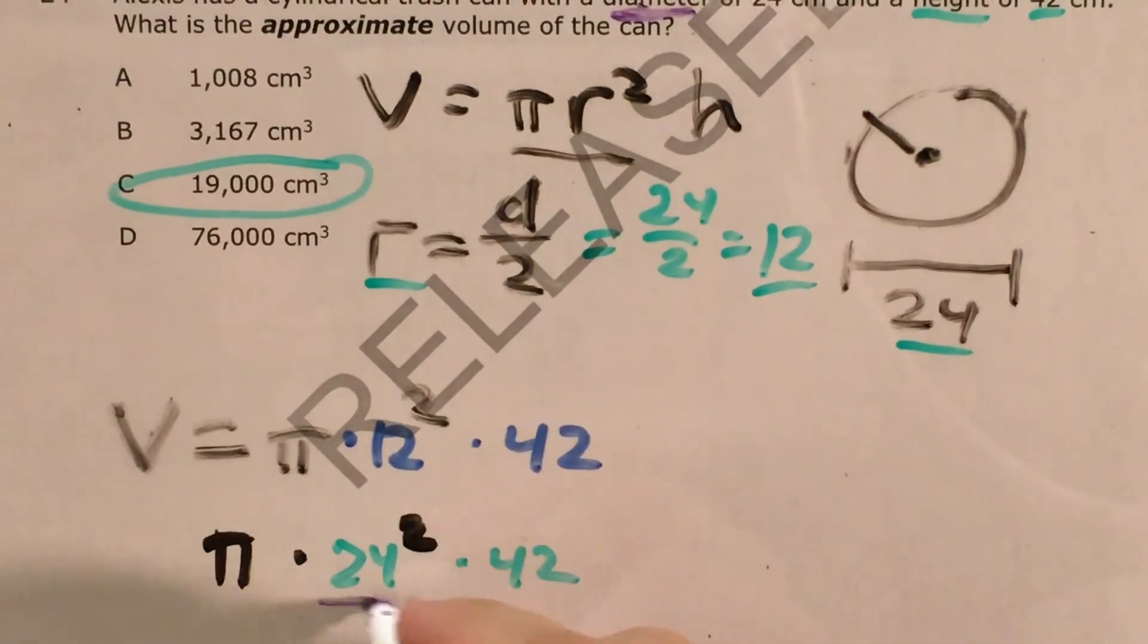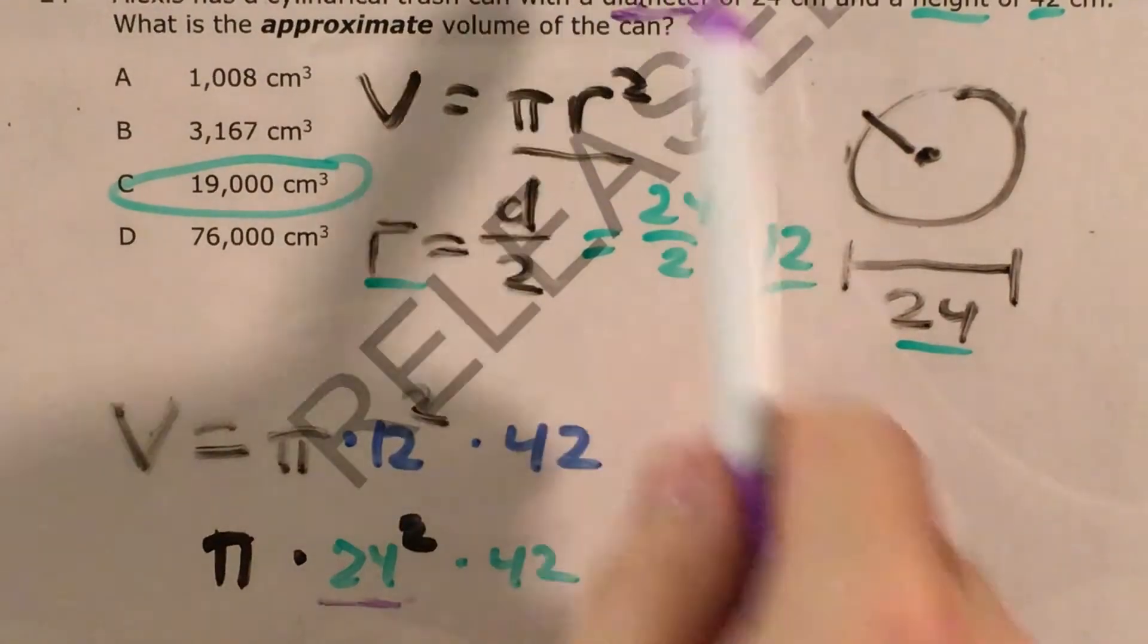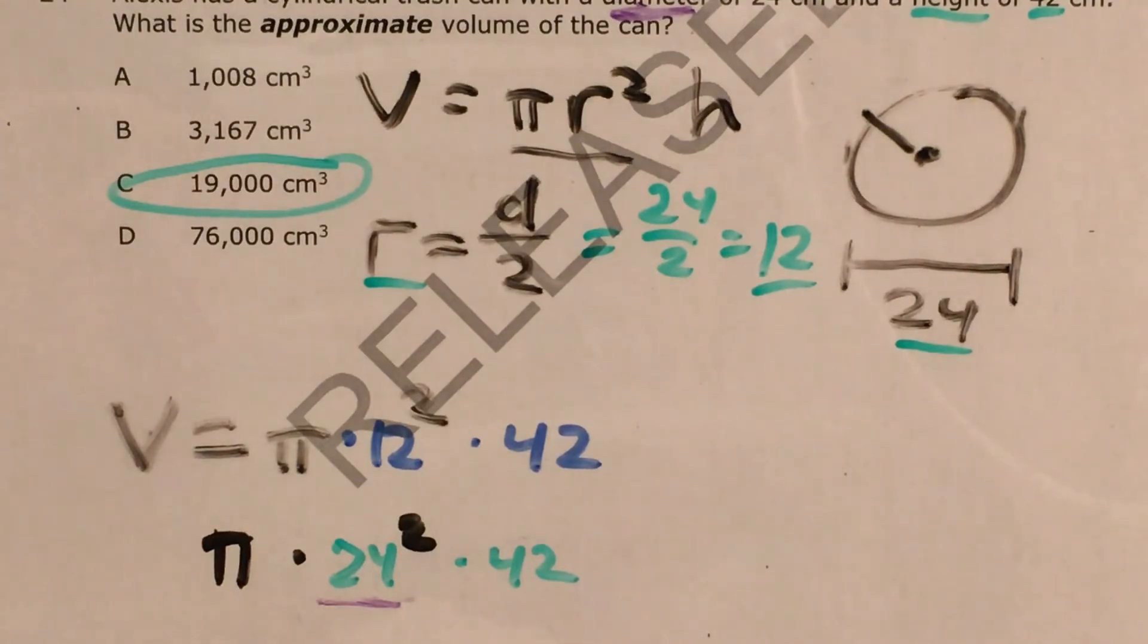So that you would use 24 in place of your radius and get that trick answer. But that's not how we do the problem. We need to remember diameter versus radius, and that radius is half of diameter, because radius just goes halfway across the circle.